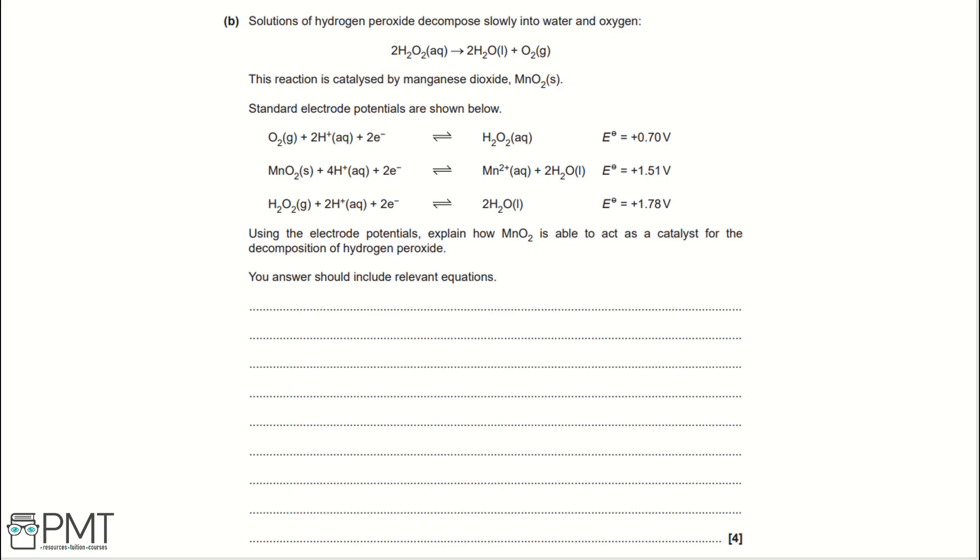Part B. Solutions of hydrogen peroxide decompose slowly into water and oxygen. This reaction is catalysed by manganese dioxide. Standard electrode potentials are shown below. Using the electrode potentials, explain how manganese dioxide is able to act as a catalyst for the decomposition of hydrogen peroxide. Your answer should include relevant equations.